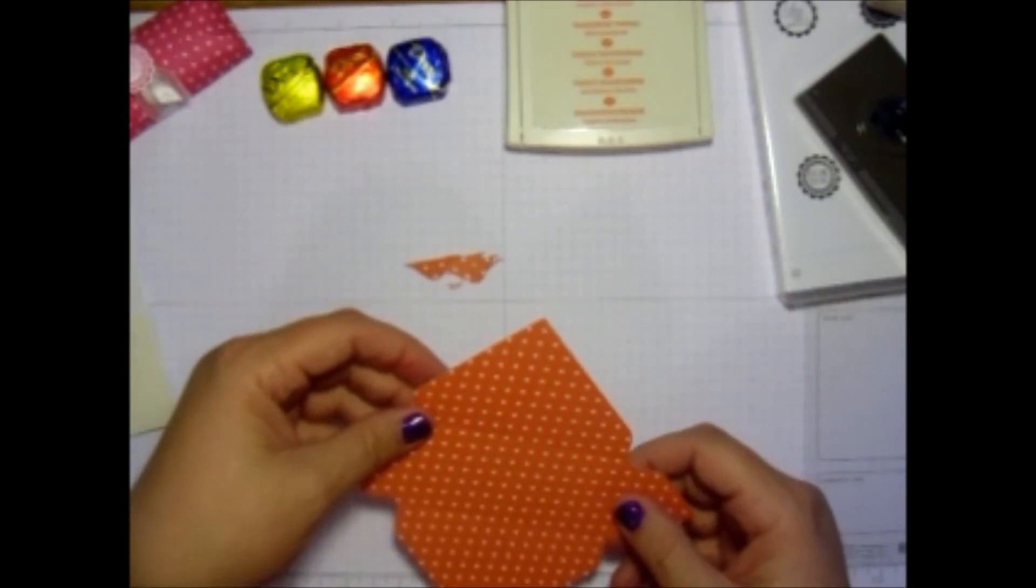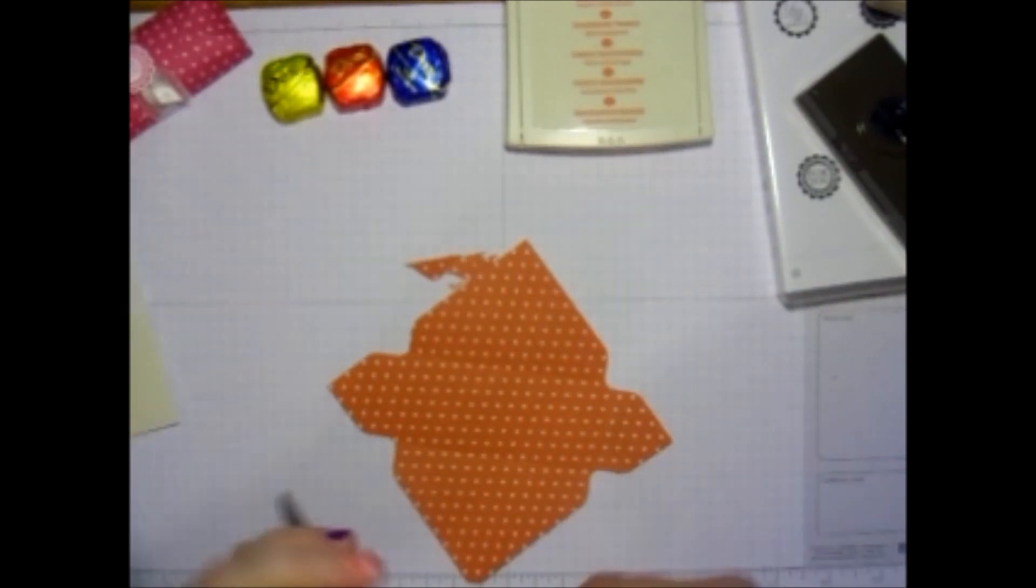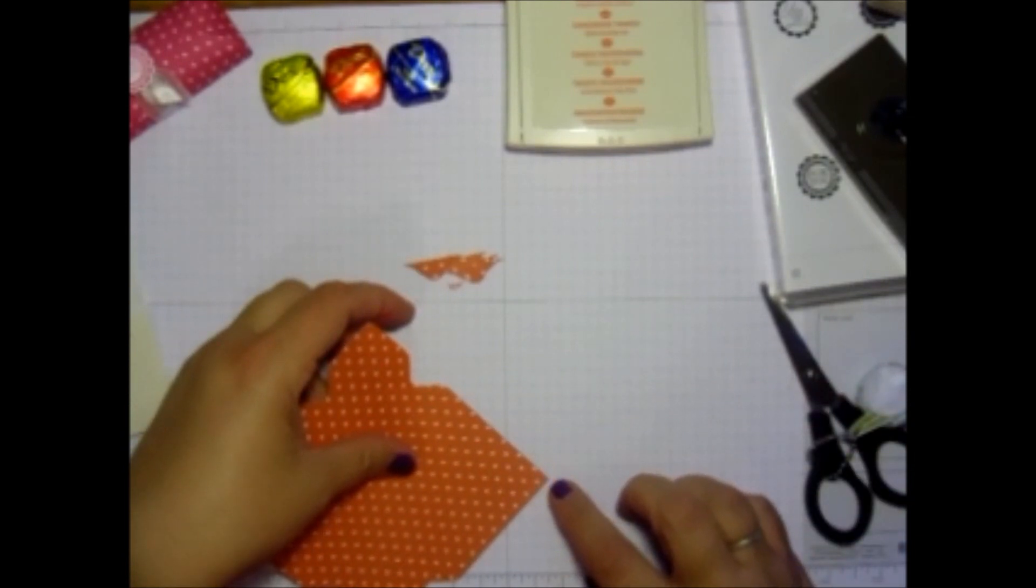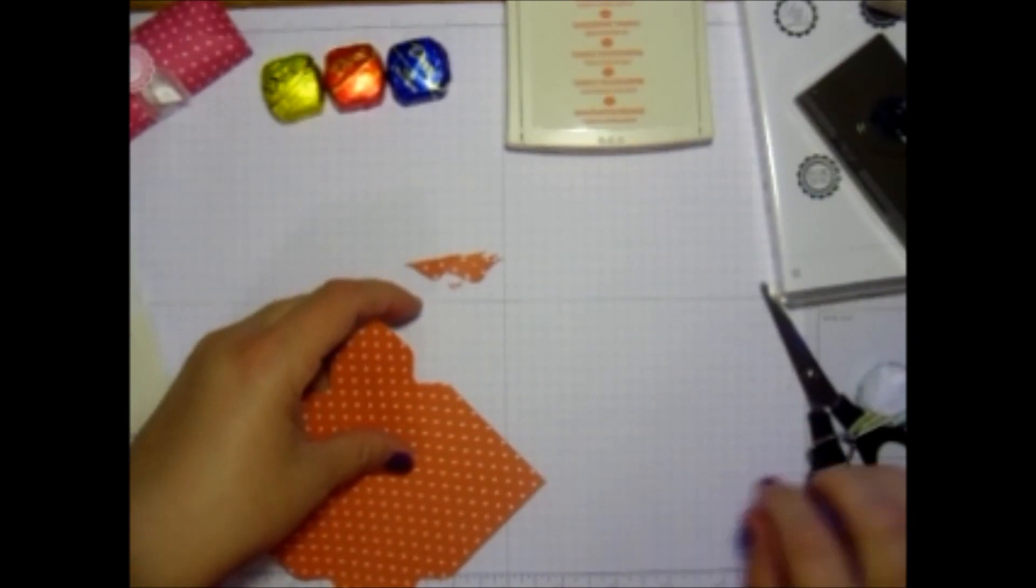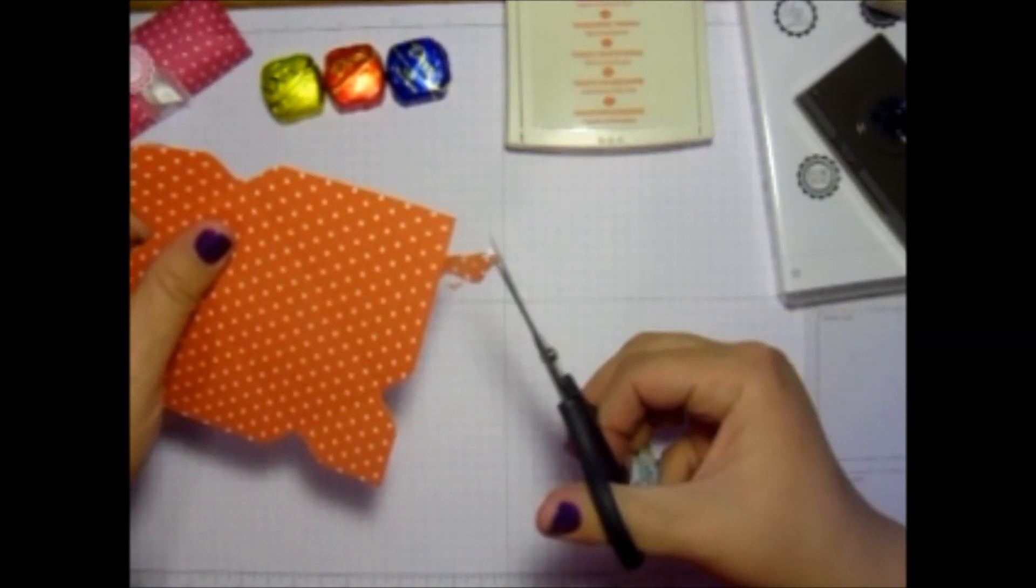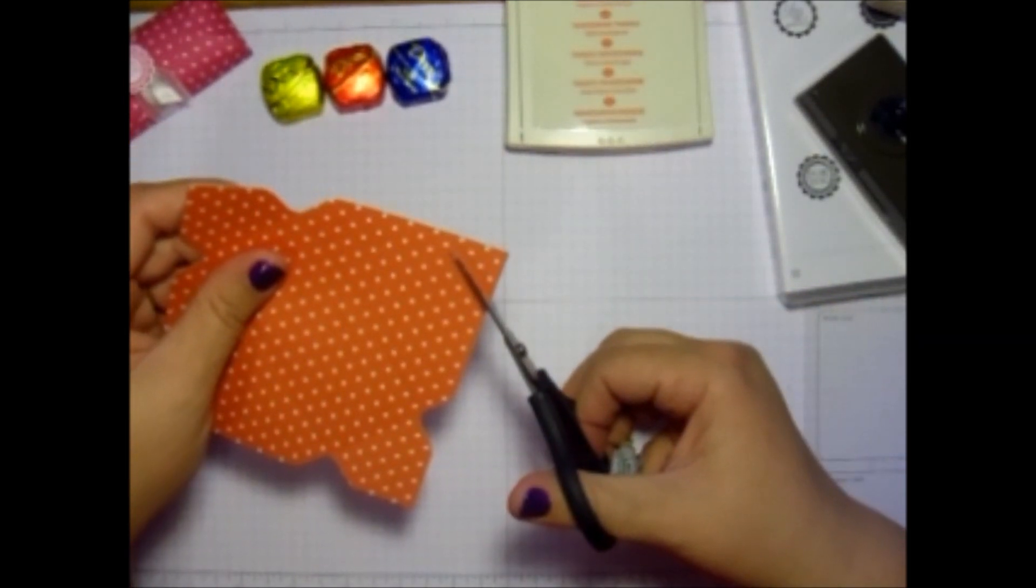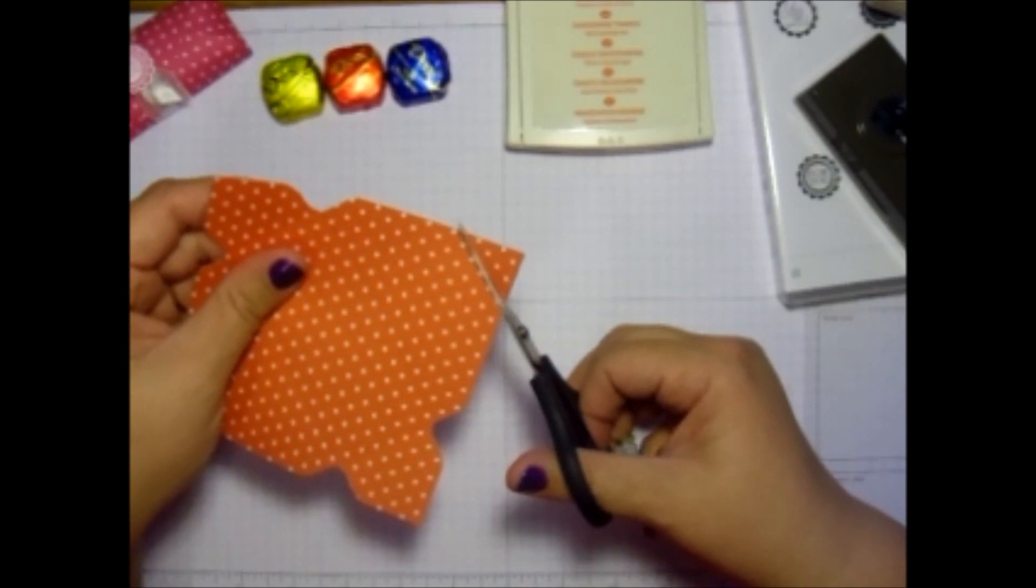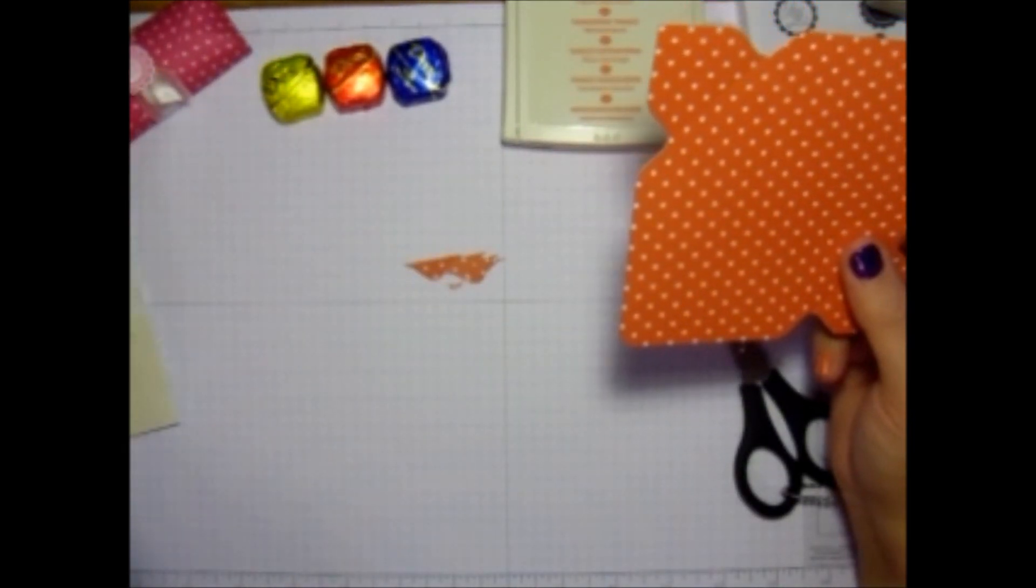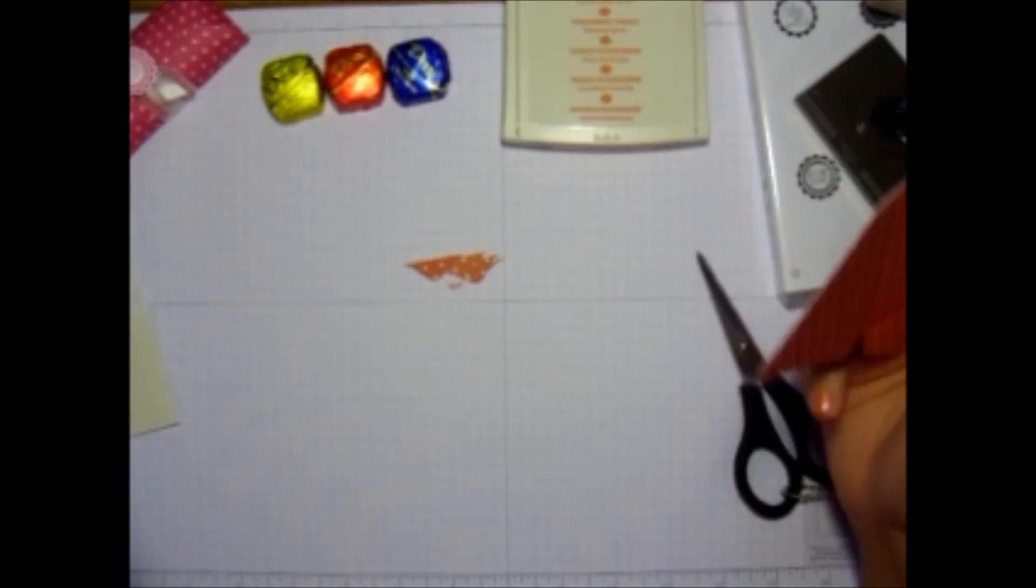So we're going to take our paper snips. And we're only going to cut off about a half an inch or so. You can eyeball this. But I'm just going to cut it straight across. And then save these pieces. You know, you don't have to, but I love to.